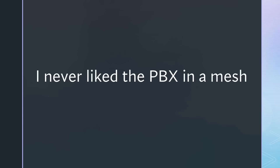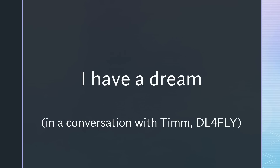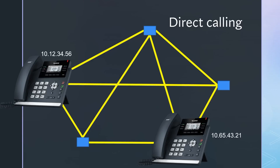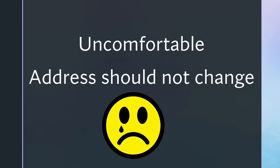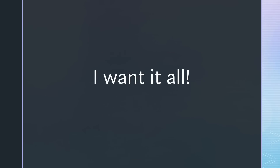I never liked this idea. This is why I started dreaming when Tim, DL4FLY, told me that they use direct calling. Voice over IP phones can call any other phone via the IP address of the receiver. This removes the single point of failure and fully exploits all possibilities of an IP mesh. Unfortunately, it is uncomfortable and only works in small and stable networks where the IP addresses do not change. As usual, I want it all — direct calling and the comfort of a PBX.